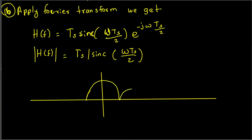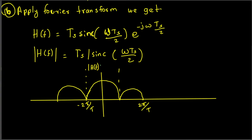The sketch of |H(f)| is a sinc-shaped envelope. The main lobe spans between ±2π/T_s in the ω domain, and the diagram shows the absolute value of H(f) symmetrically centered at zero frequency.